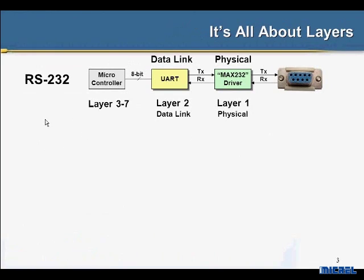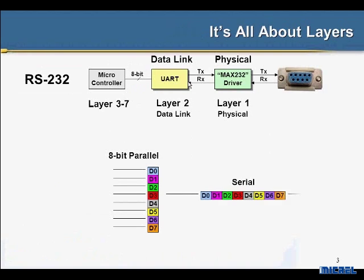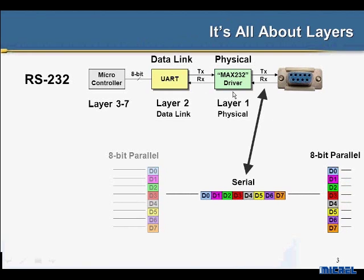Let's look at this in terms of RS-232. On RS-232 you'll have a microcontroller a lot of times, and this microcontroller talks over an 8-bit interface to a UART. The UART is responsible for taking digital data that's parallel words and turning it into serial. Once it's serialized, it sends it out over a physical layer driver — a layer 1 driver. Those layer 1 drivers are like MAX232 devices and it goes out your DB9 connector.